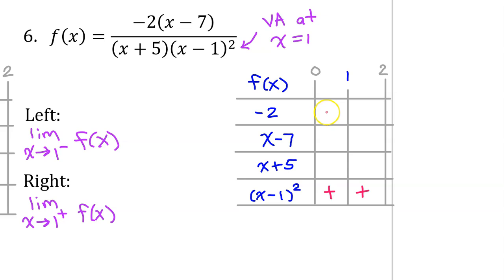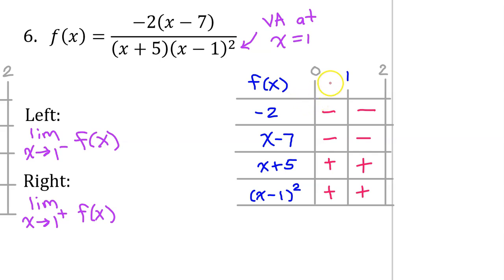Negative 2 is a constant, so it's always negative. For x minus 7, plugging in 1 gives 1 minus 7, which is negative 6 — so that's negative around x equals 1. For x plus 5, plugging in 1 gives positive 6, so that factor is positive near x equals 1. The overall sign of f of x will be positive in both intervals because we have an even number of negatives. So the limit as x approaches 1 from the left and from the right of f of x is positive infinity.